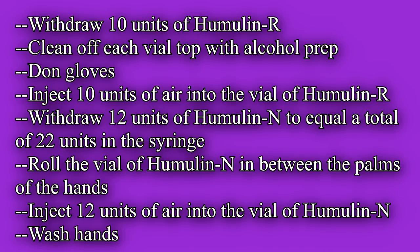The steps to order are: withdraw 10 units of Humulin R; clean off each vial top with alcohol prep; don gloves; inject 10 units of air into the vial of Humulin R; withdraw 12 units of Humulin N to equal a total of 22 units in the syringe; roll the vial of Humulin N in between the palms of the hands; inject 12 units of air into the vial of Humulin N; and wash hands.